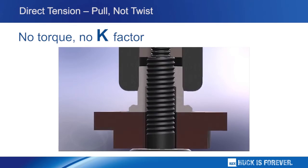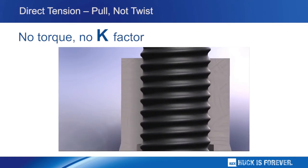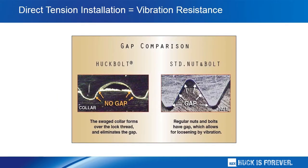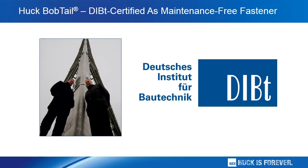With this process, the quality of the installation is assured because that random K-factor torque is eliminated. In addition to easy and safe installation, two-piece huck bolts such as the bobtail deliver unmatched vibration resistance. Note how the swaged collar forms over the lock thread of the bolt, leaving no gap that is subject to the forces of transverse vibration. By contrast, regular nuts and bolts leave gaps even when heavily torqued, leaving the joint vulnerable to transverse vibration. Because of the unique design of the bobtail, it is unmatched among other fasteners in vibration-resistant performance. In fact, it has been certified by the DIBT as a maintenance-free fastener.